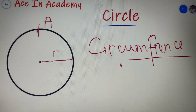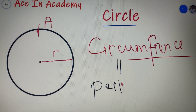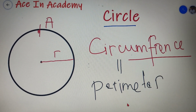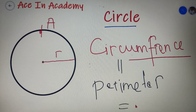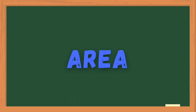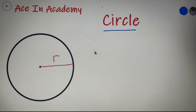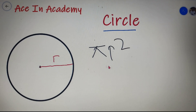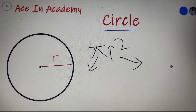The value of the perimeter of the circle is also equal to that of the circumference of the circle. Thus the perimeter of a circle is also equal to 2πR. The value of the area of a circle is equal to πR², where π is equal to 3.14 and R is the radius of the circle.